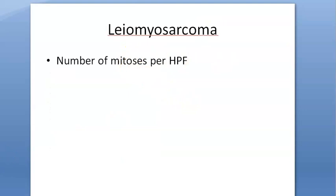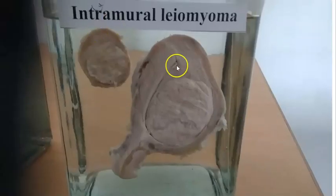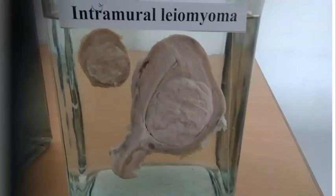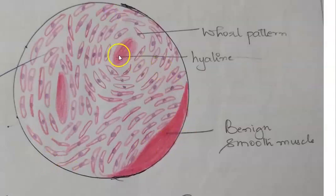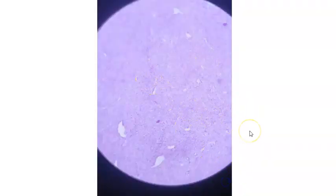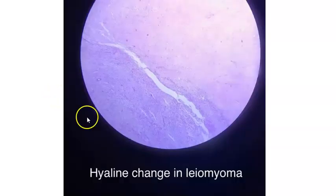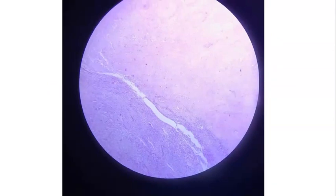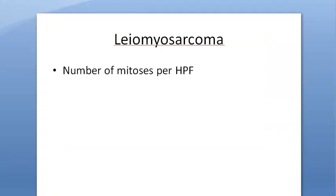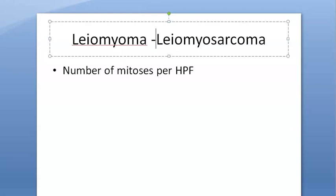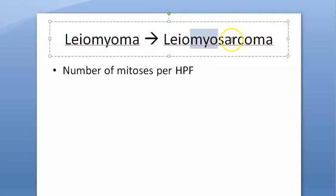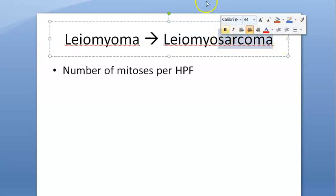In pathology, the gross specimen shows intramural as most common. Microscopically, you see a lot of smooth muscle — that's why it's called a tumor of smooth muscle. There is also a lot of hyaline deposit shown. If this leiomyoma progresses, it can become leiomyosarcoma, which is cancerous. In the high-power field (HPF), if you see mitosis, that indicates it is progressing to leiomyosarcoma.